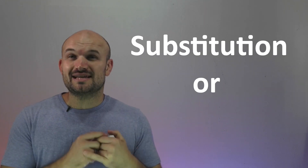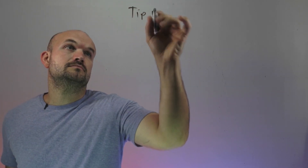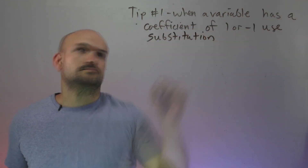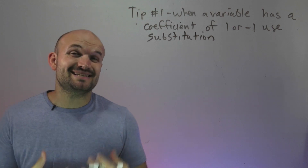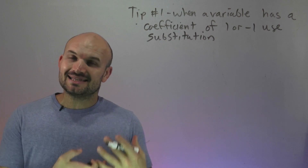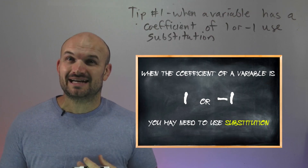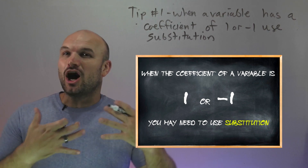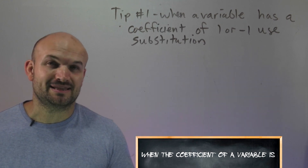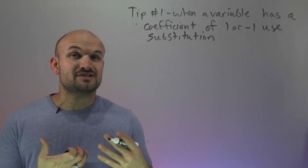Before I give you the first example, typically students have trouble identifying whether they should solve the system using substitution or elimination. So that's going to bring me up to tip number one. Tip number one is basically saying: when you have a system of equations, look to see the coefficients of your variables. A lot of times when the coefficient of a variable is 1 or negative 1, you're going to want to use substitution. That's not always the case, but you will see substitution is going to be the preferred method.